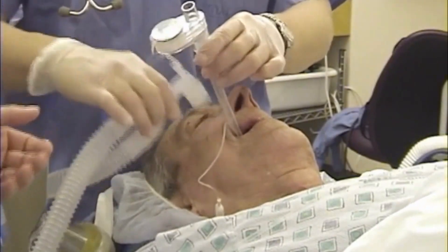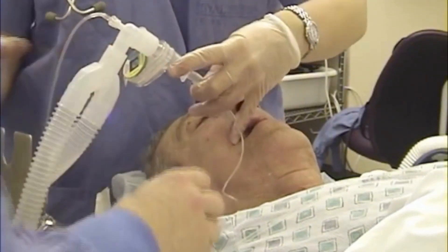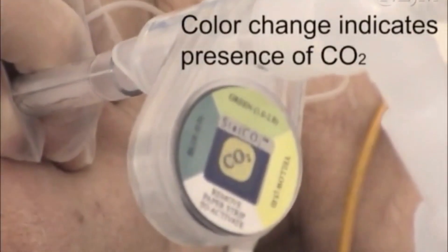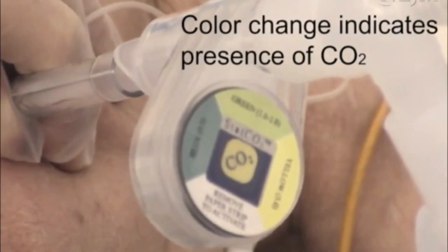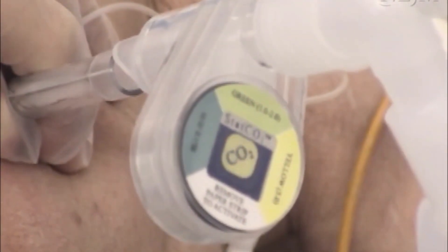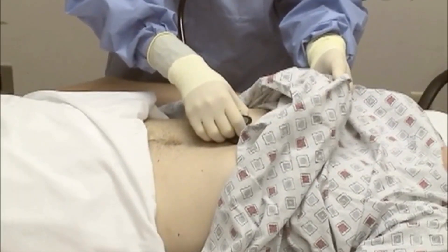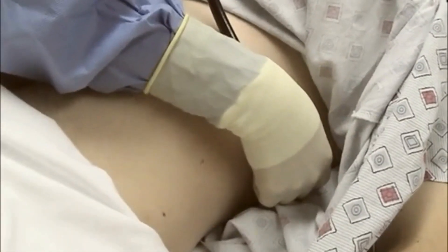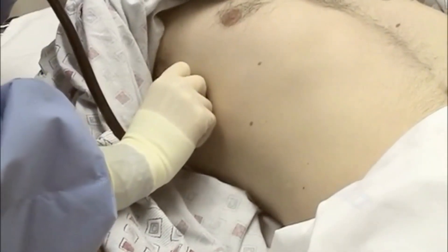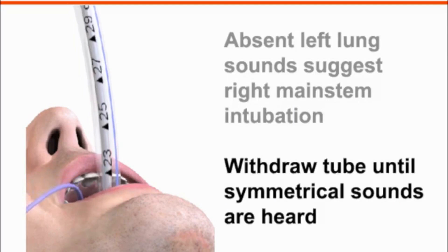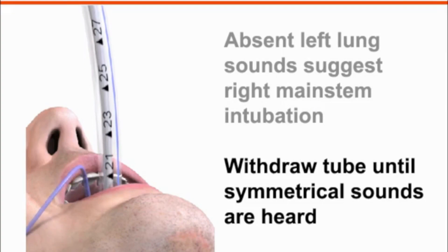Place the CO2 detector on the endotracheal tube and attach the ventilation bag, administering a few tidal volume breaths. Carbon dioxide will be reliably and consistently detected within the first 6 breaths of an endotracheal intubation and with each exhalation thereafter, except in some cases of cardiac arrest when gas exchange may not occur. Assess secondarily for esophageal tube placement by auscultation over the stomach during positive pressure ventilation, and auscultate both lungs in the mid-axillary line to assess for equal bilateral air movement. If breath sounds are diminished on the left side after intubation, gradually withdraw the endotracheal tube until symmetrical breath sounds are restored.